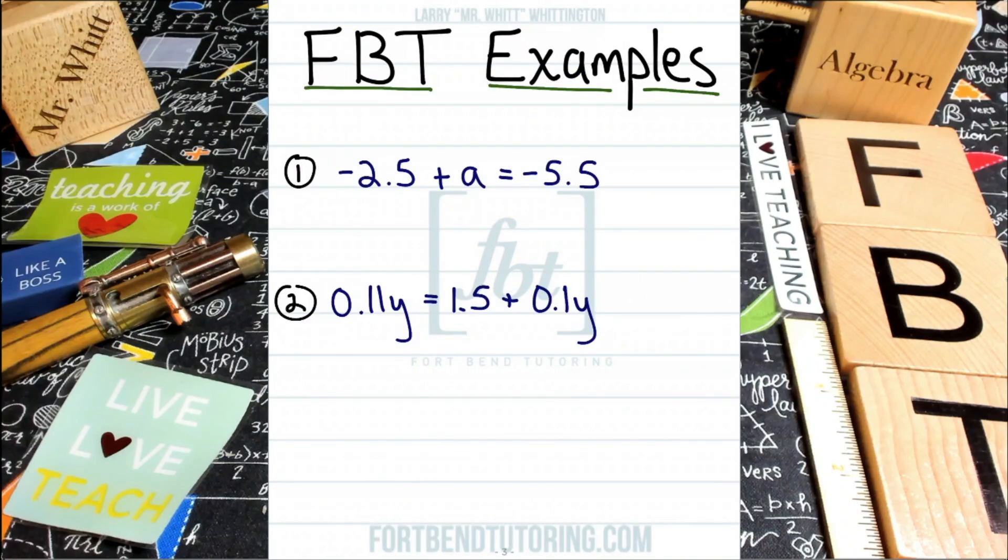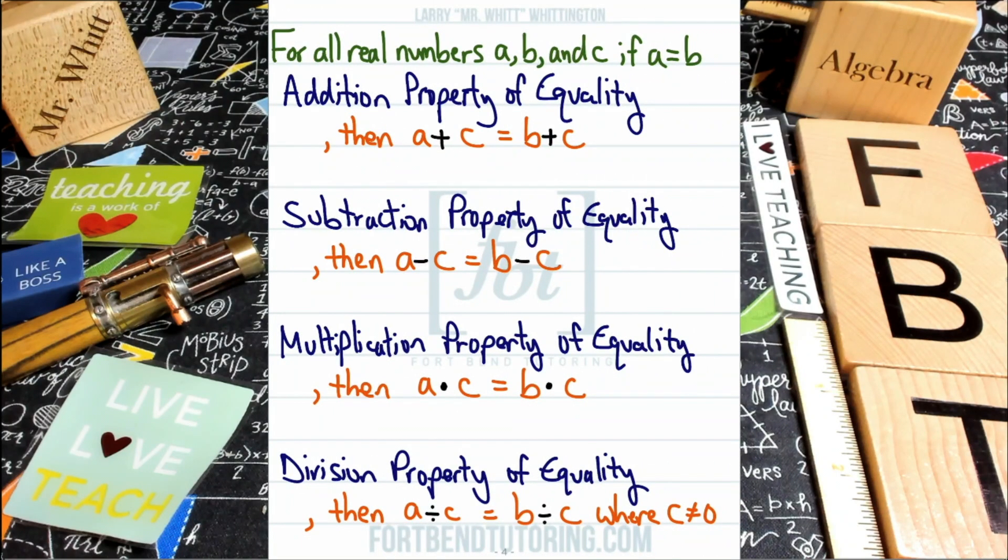Here we have two examples, one is negative 2.5 plus A equals negative 5.5 while the other, number two, is 0.11Y equals 1.5 plus 0.1Y. Alright, and let's keep in mind that we'll be utilizing our properties of equality to keep the equilibrium of the equation. Keeping both sides balanced at all times so that we can keep the integrity of the equation intact.